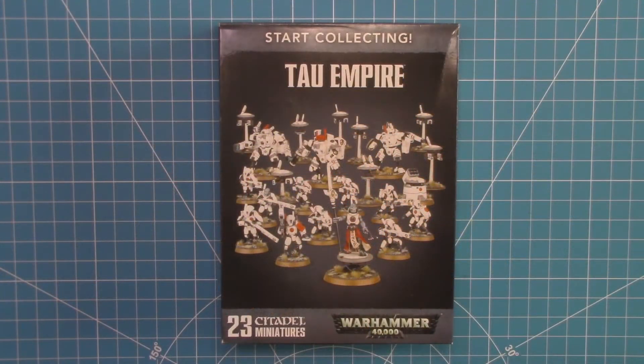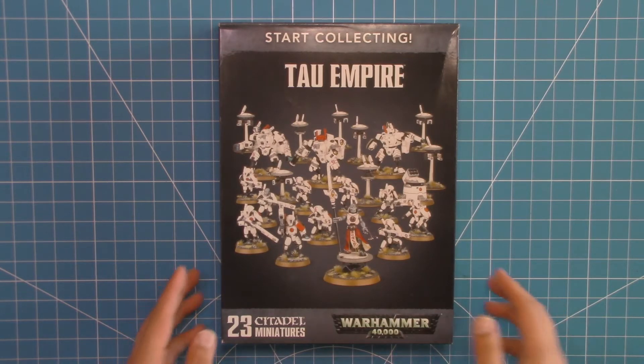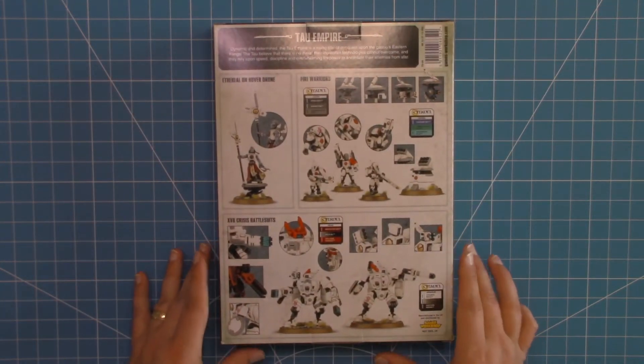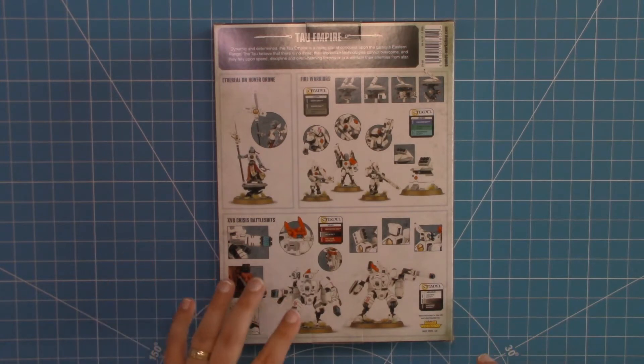Here we have the Tau Empire Start Collecting Set for Warhammer 40K. It contains 23 miniatures, Citadel miniatures from Games Workshop. Let's go ahead and flip it over so we can take a look at the other side. Here it's going to show you what is actually in the box.